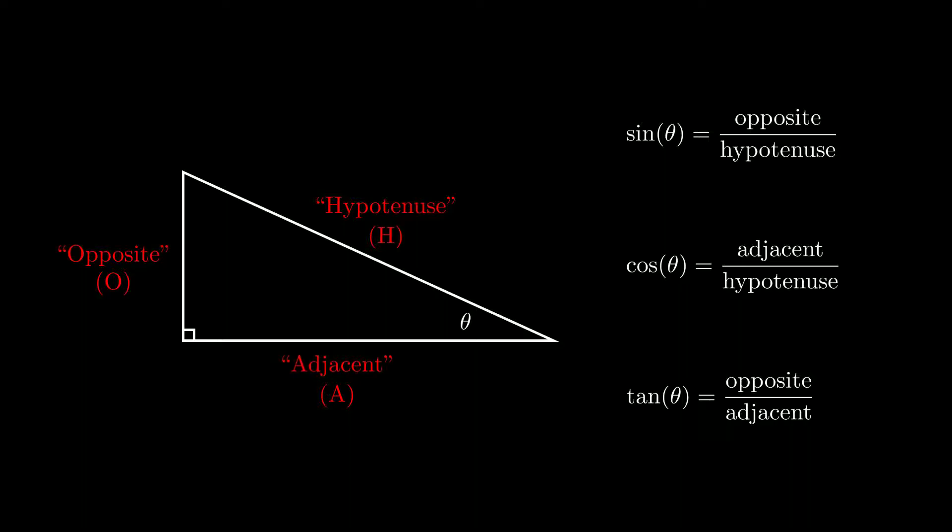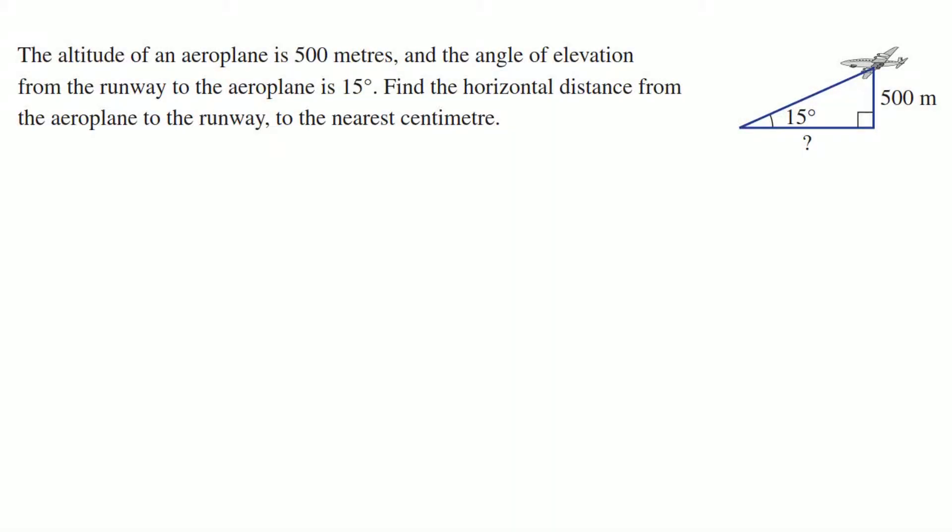I'll give you a few quick examples from your book and then it'll be your turn. So altitude of an airplane is 500 meters, angle of elevation, which just means the angle going up from the horizontal, from the runway to the airplane is 15 degrees. Find the horizontal distance from the airplane to the runway. So that's the distance marked with the question mark. So the first thing we do, if you look at the picture, is to locate the hypotenuse, opposite, and adjacent. So I called those just H, O, and A. So H is opposite the right angle, O is opposite the 15 degree angle, and A is the remaining one.